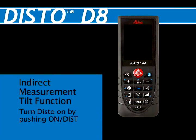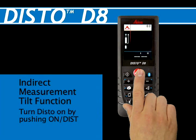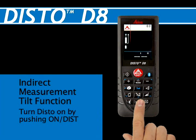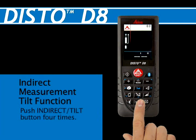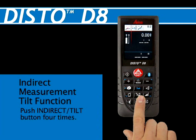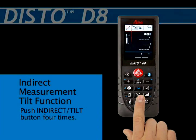Turn the DISTO unit on by pushing ON/DIST, the red button at the top center of the keypad. Push the indirect tilt sensor button four times — the fourth button down and center — to select double tilt measurement with two measures.